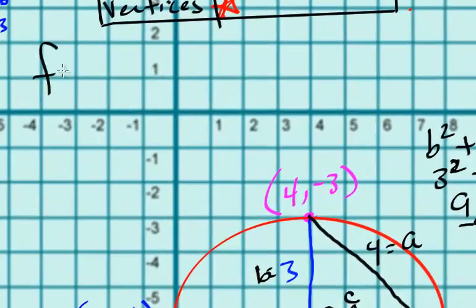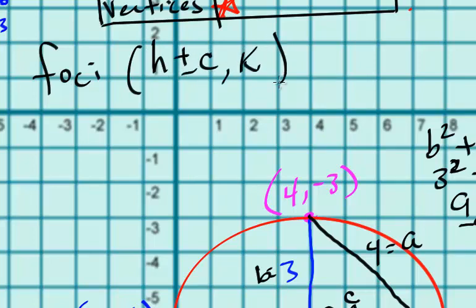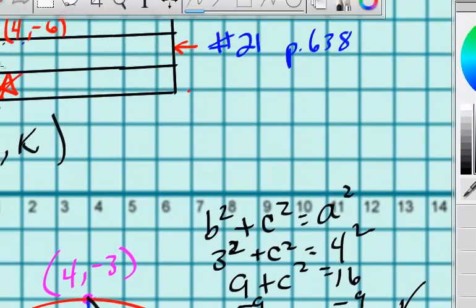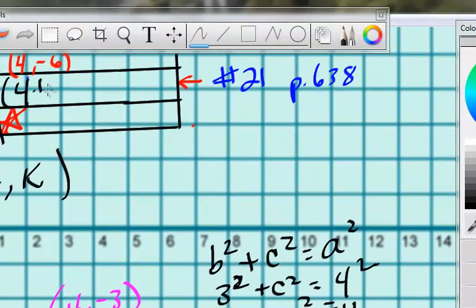For our focus or foci formula, it is h plus or minus c comma k. That is correct, right? It's hard to memorize that sometimes. So it would be h, of course, remember is this, k is that, that's the center. So it would be 4 plus or minus radical 7 comma negative 6.